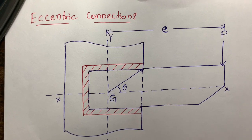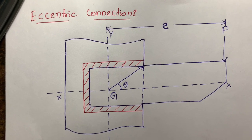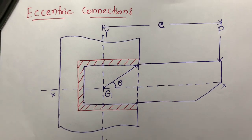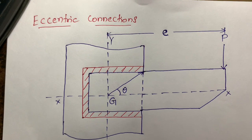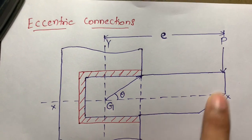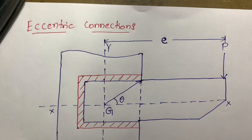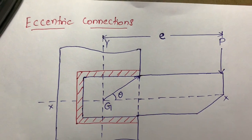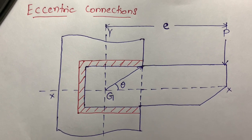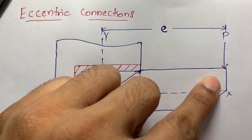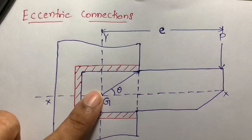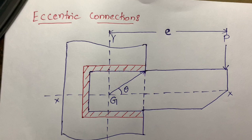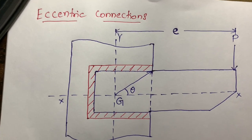Hello everyone. Now I am going to explain about eccentric connections in the design of steel structures. Eccentric connections means the point — the load point — when the line of action of the load does not pass through the center of gravity of the weld group. When the line of action of the load does not pass through the center of gravity, it is called an eccentric load.